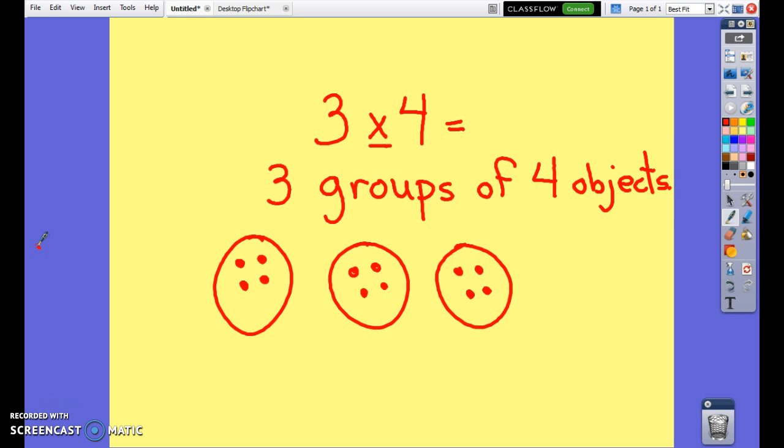So there are many different ways that you can count them. You can count them one at a time: one, two, three, four, five, six, seven, eight, nine, ten, eleven, twelve. So you know that 3 groups of 4 equals 12.